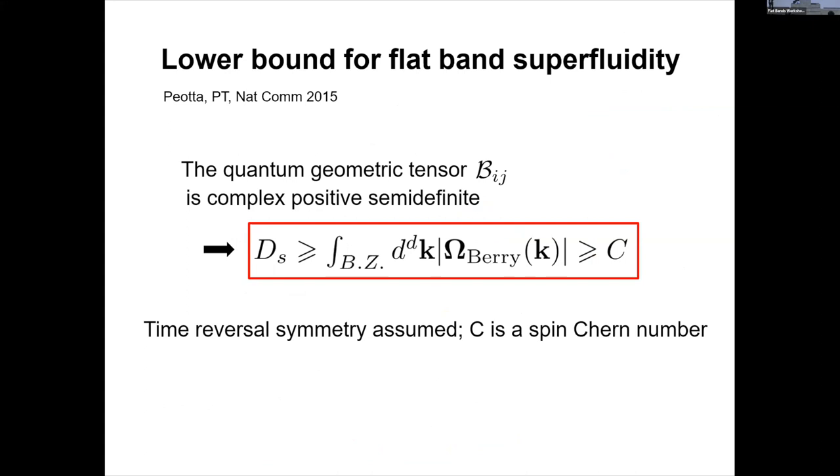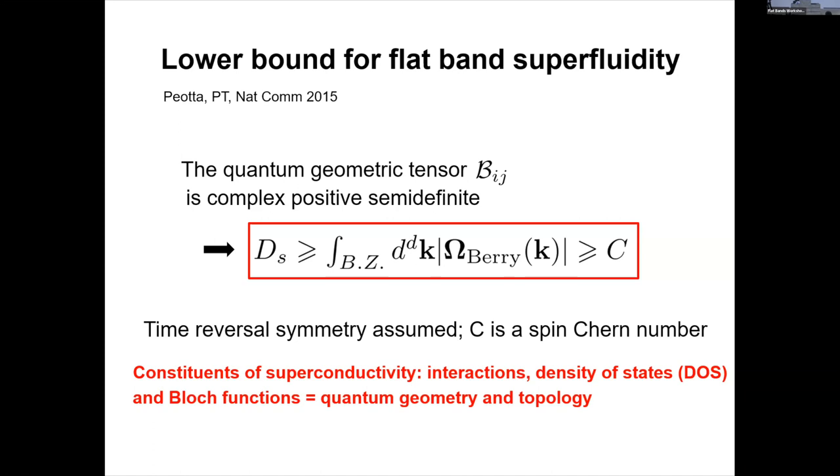So this quantum geometric tensor is positive semi-definite and that allows to derive many inequalities. And this allowed us to show that the superfluid weight of flat-band superconductivity has a fundamental bound given by Chern number. This result is for time-reversal symmetric system. So this is actually a spin Chern number. And of course it's enough if you have Berry curvature somewhere in the band or naturally if you have just a non-zero quantum metric. That alone guarantees, but the Chern number gives you a very nice bound. So now we have learned that in this quest of higher critical temperatures, it's not only that we can play with interactions and density of states. We can also play with the Bloch functions, topology, quantum geometry, this can help you to get there to the goal.